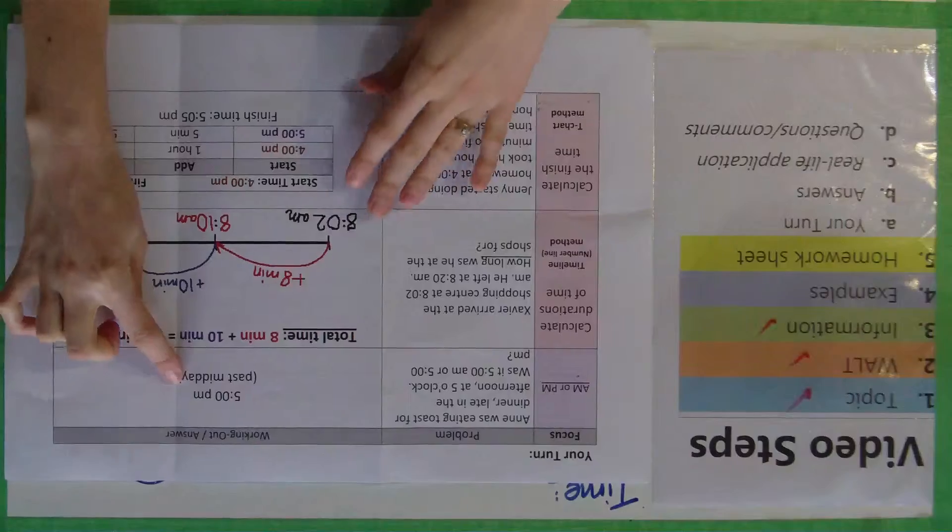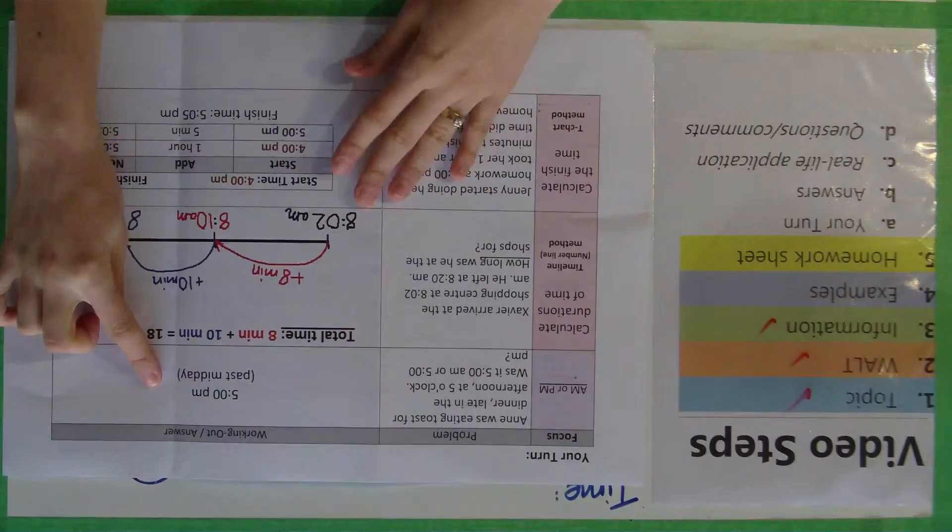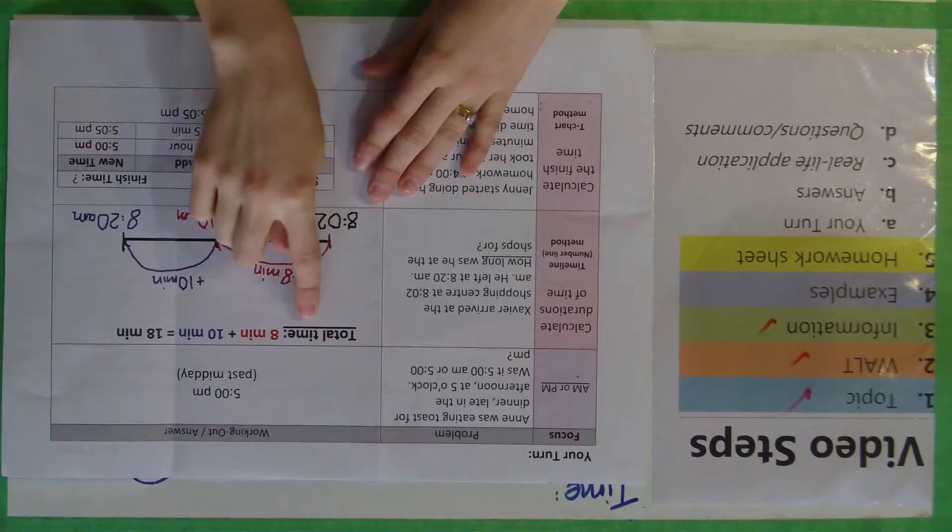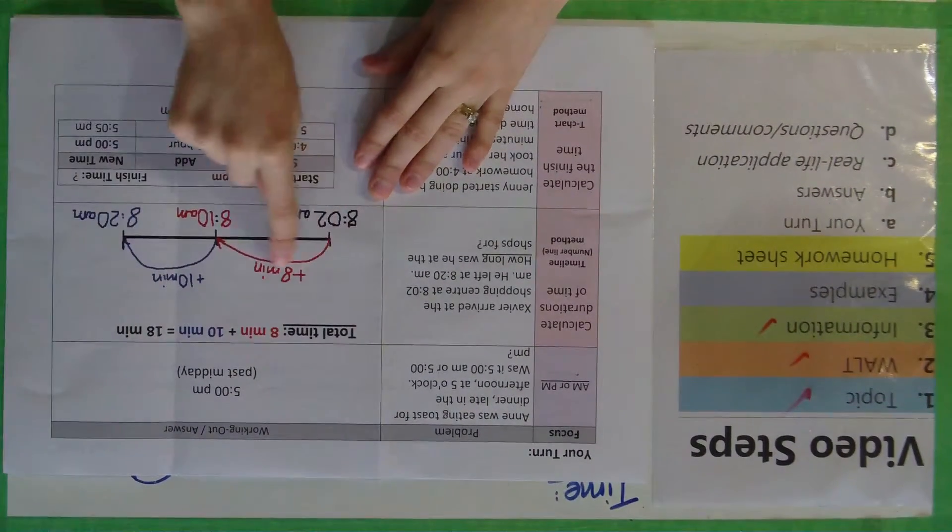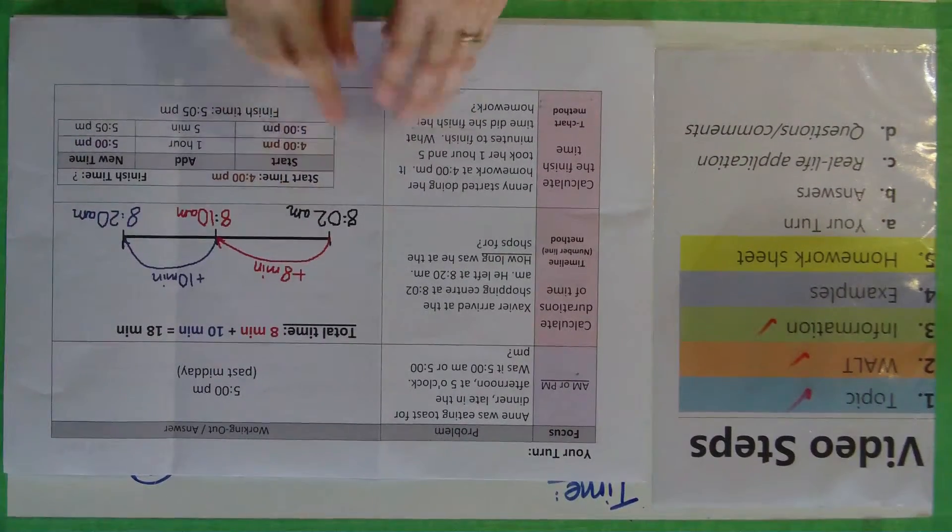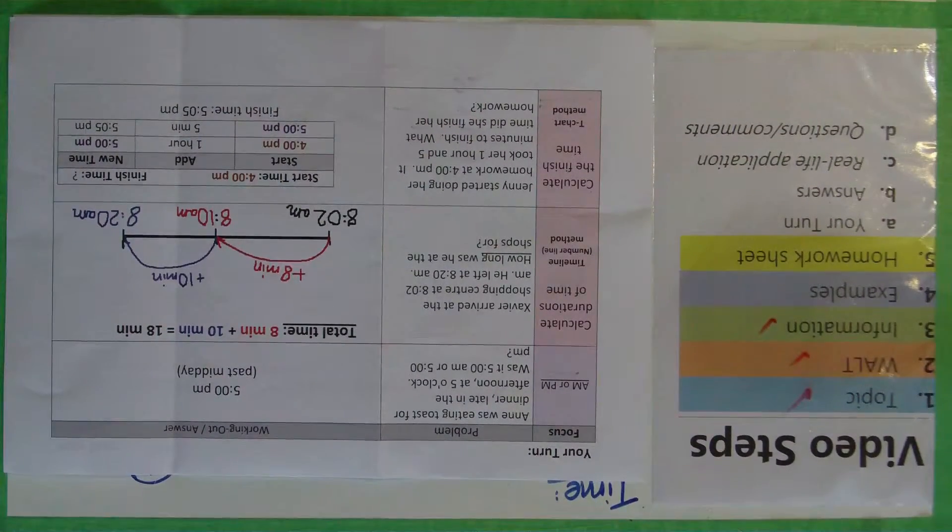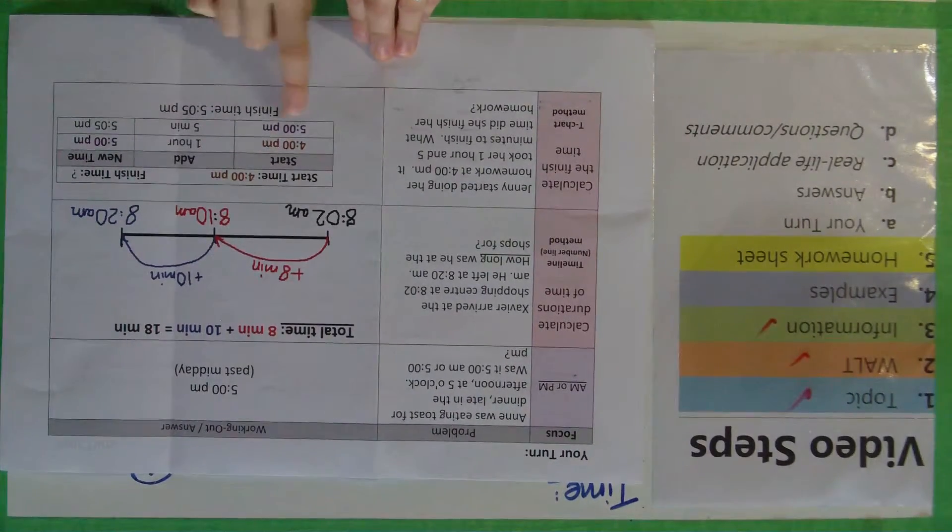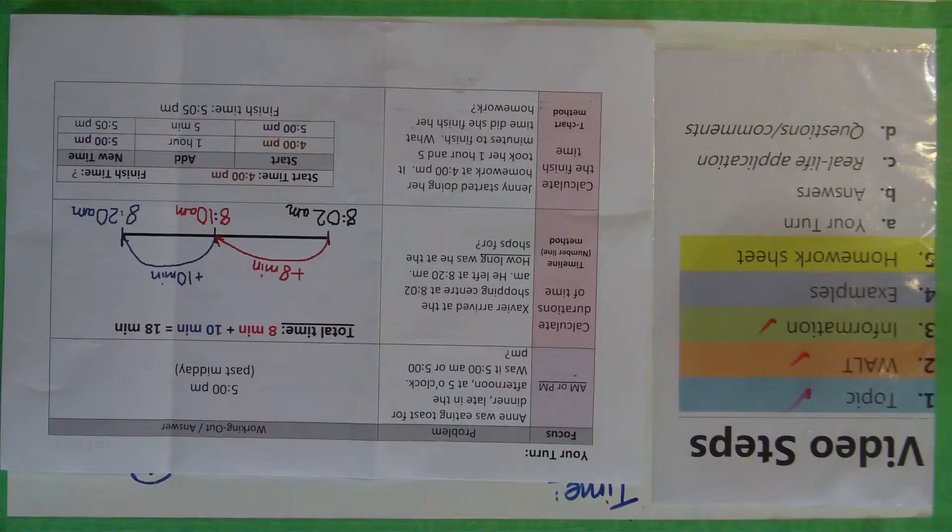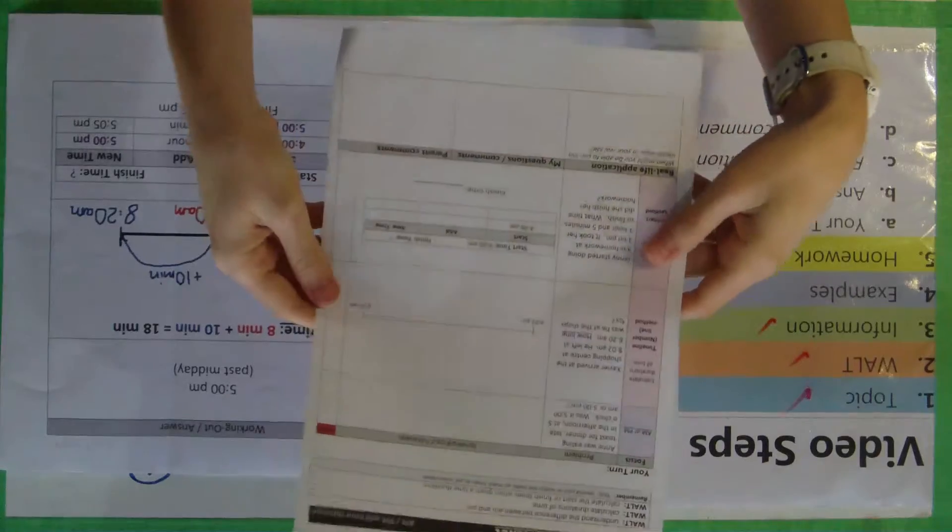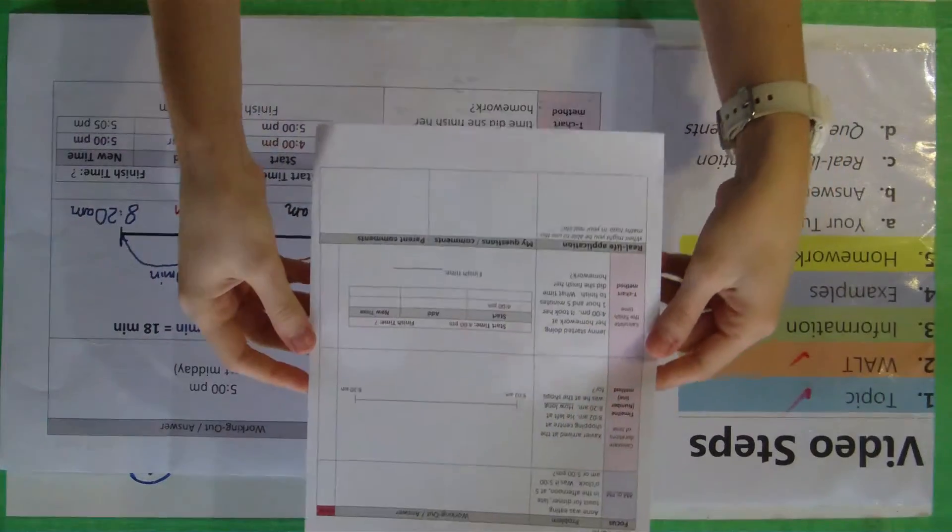All right, so here are the answers. 5 p.m., which means it's past midday, it's afternoon, or the evening almost. Then we've got here, total time would be 18 minutes. Have a look at how I bounced across my timeline to find the time difference between the two, or the duration of time. And then the last question here, the finish time would be 5:05 p.m. Have a look at how I've worked it out. If you're not sure and you did get it wrong, just make sure you still mark on your homework sheet. And then you can always ask me tomorrow in class to find out more information.